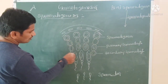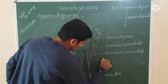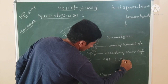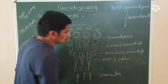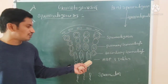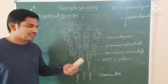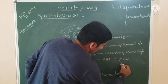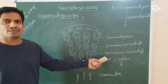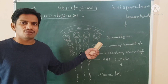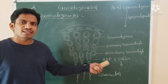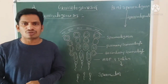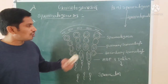The Sertoli cells produce androgen-binding protein and inhibin — these are two protein hormones secreted from the Sertoli cells. Follicle-stimulating hormone and luteinizing hormone act on these cells and can encourage the spermatogenesis process.